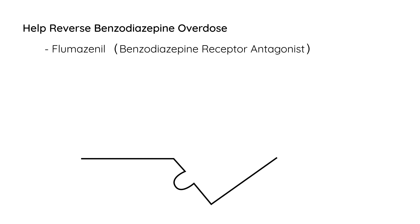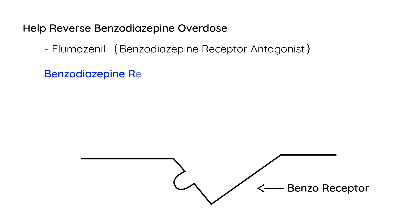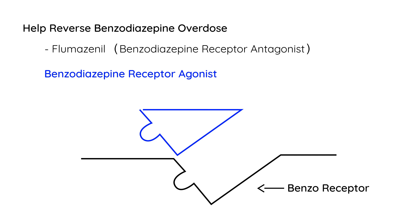Let's say you have a benzodiazepine receptor area — this is a benzo receptor. Normally, benzodiazepine receptor agonists that work to stimulate this receptor will fit perfectly in here, just like a puzzle. For example, this could represent a medication like alprazolam.